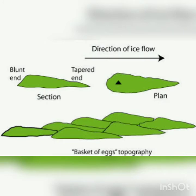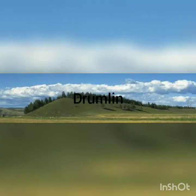The next feature is drumlins. Drumlins are egg-shaped structures and are both erosional and depositional landforms. We can describe them as having an egg-basket-like structure. They are different from roche moutonnée and also different from crag and tail.